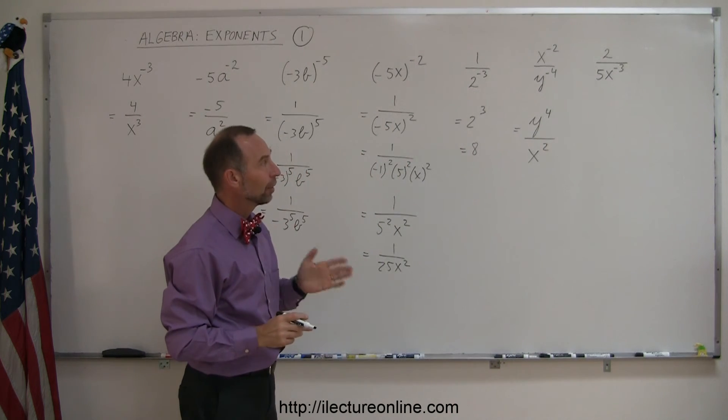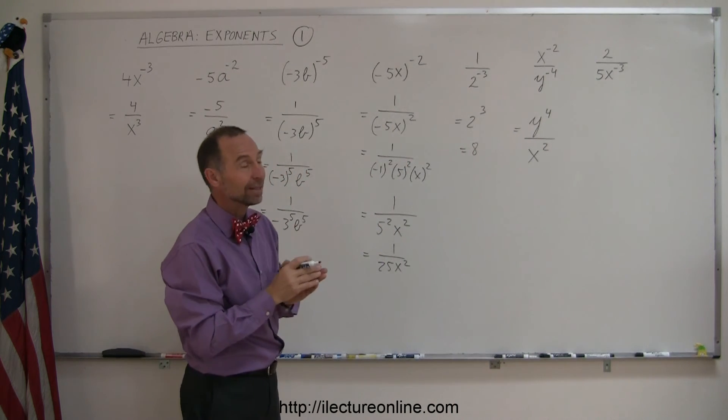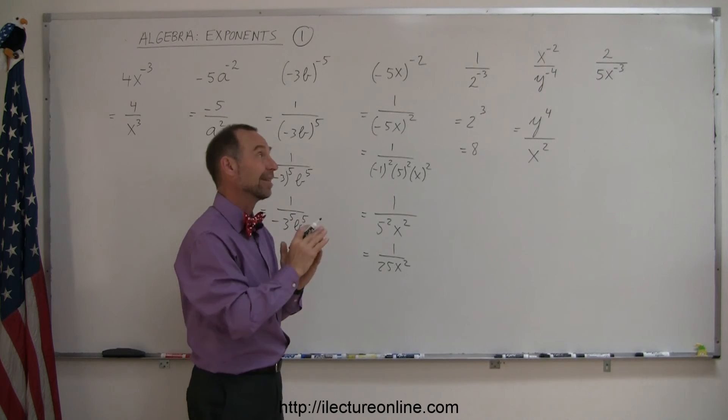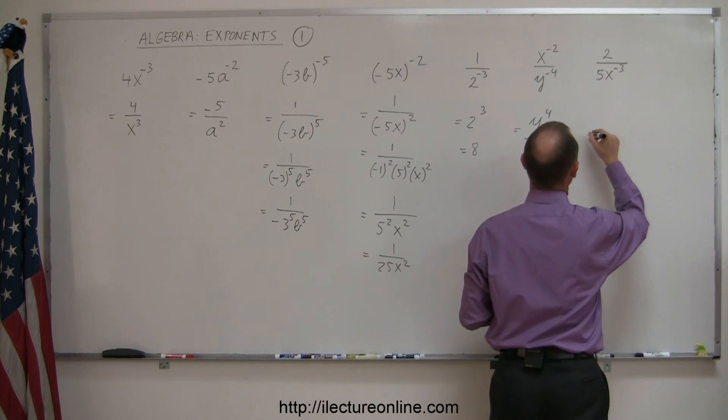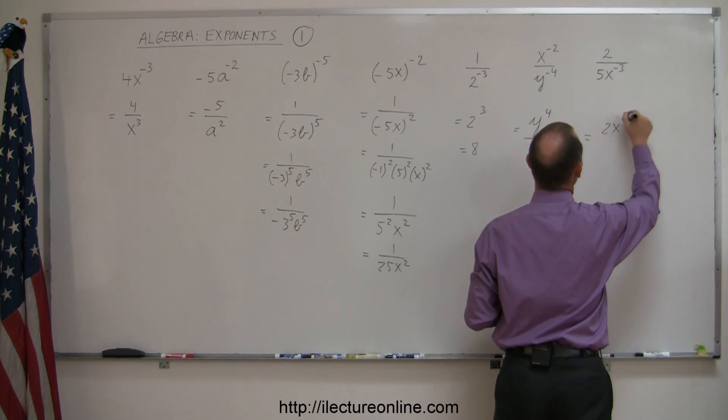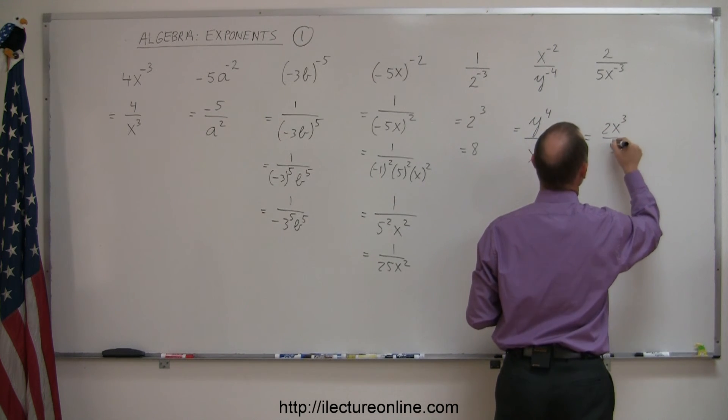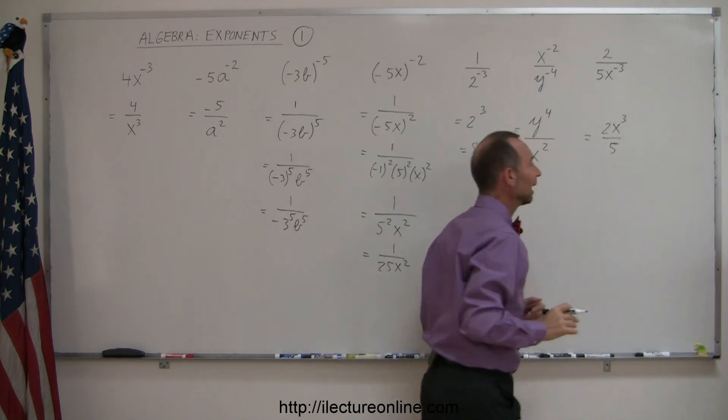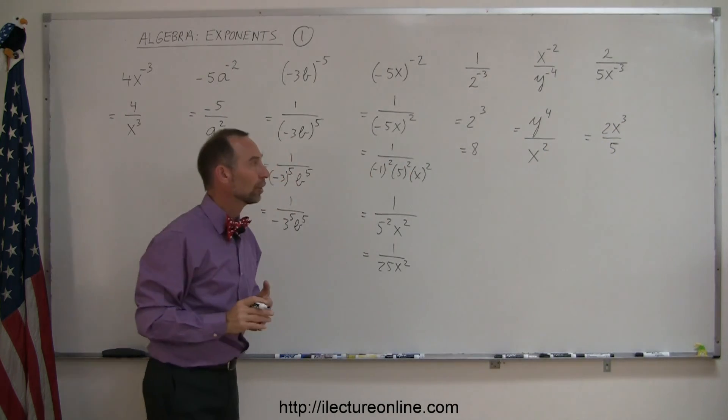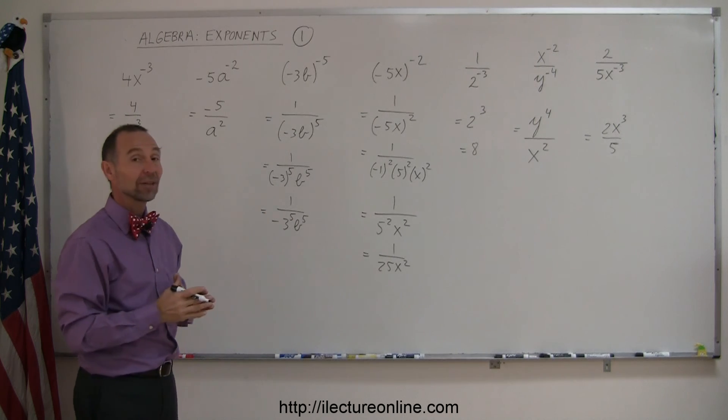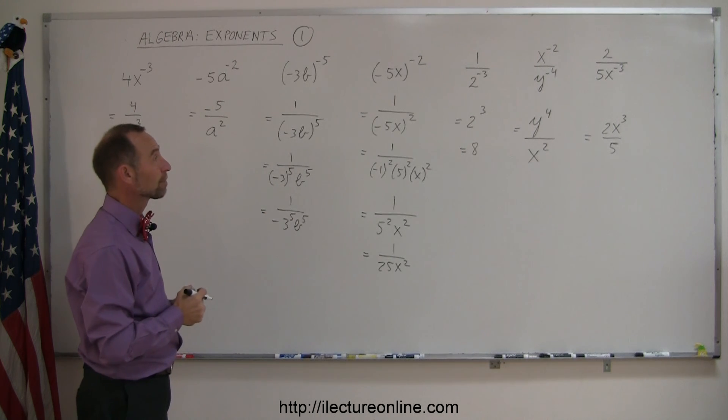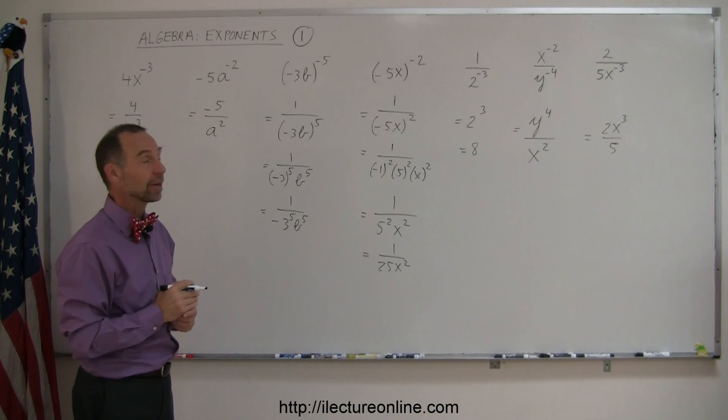And finally, our last example, notice that the x to the minus 3, the minus 3 only applies to the x, not to the 5, so the 2 and the 5 stay where they are, just the x changes, so this becomes 2x to the positive 3 power divided by 5. Notice only the x is affected, and we move the x to the numerator to turn that into a positive exponent. And that's how you simplify expressions like this with negative exponents. Alright, so more examples coming up.